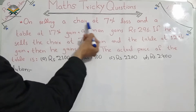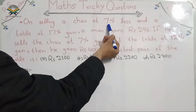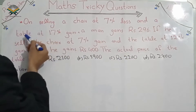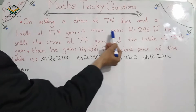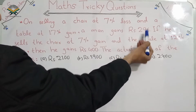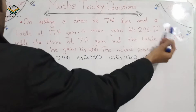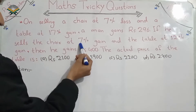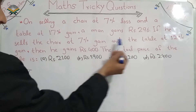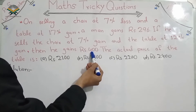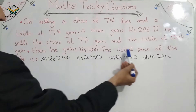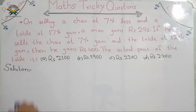On selling a chair at 7% loss and a table at 17% gain, a man gains Rs. 296. If he sells the chair at 7% gain and the table at 12% gain, then he gains Rs. 400. We need to find out the actual price of the table.